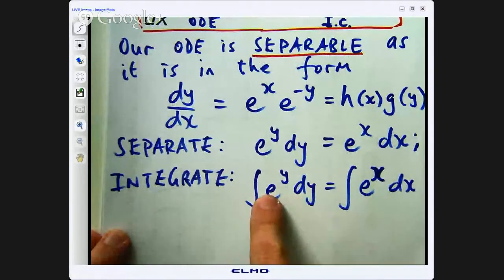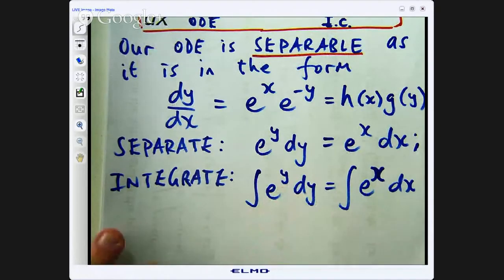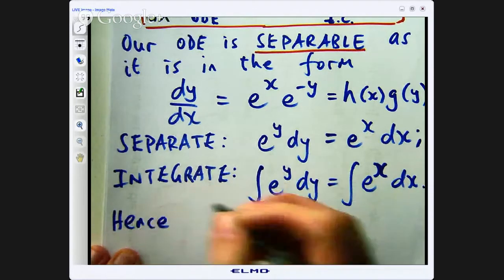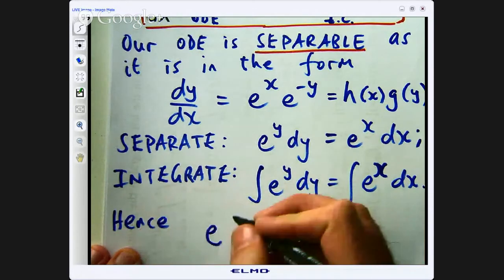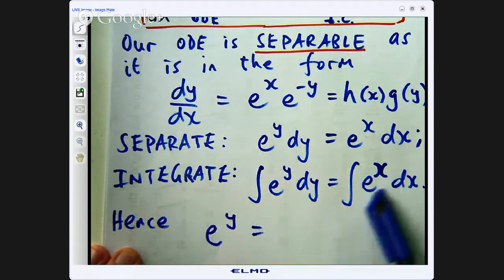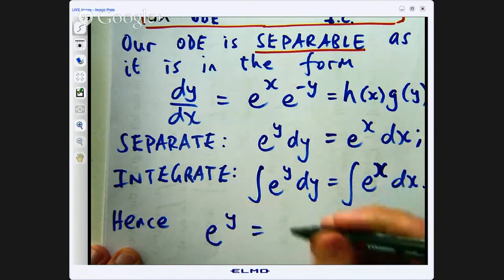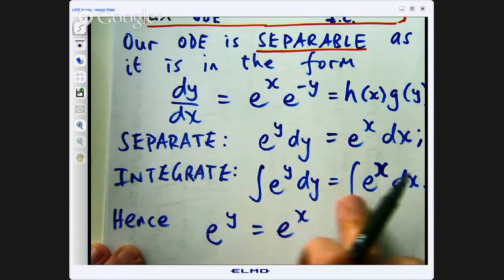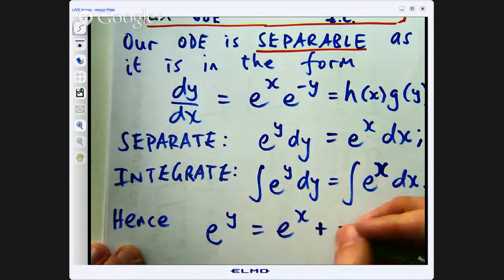Over here, you integrate with respect to y. So I am integrating e to the y with respect to y. So I am going to get e to the y there. And over here, I integrate e to the x with respect to x. And you know, these are indefinite integrals. So I probably should put a constant of integration here.